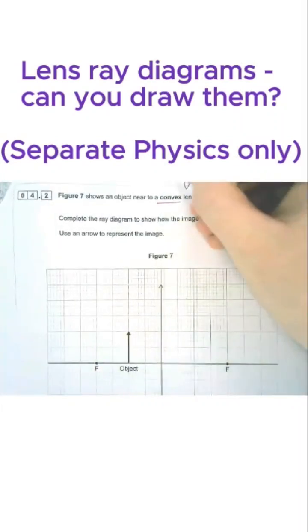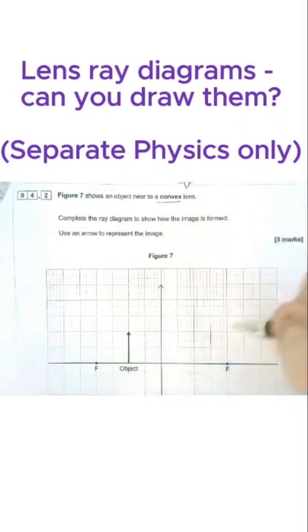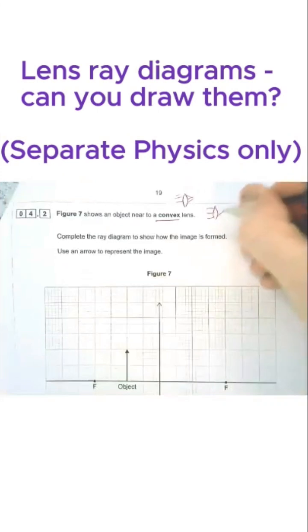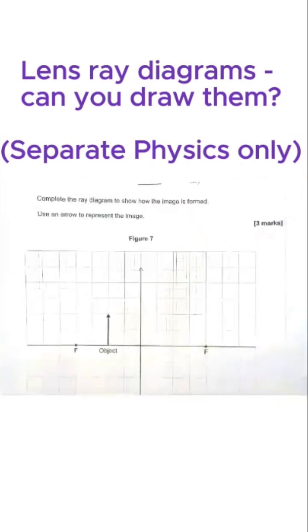It's a convex lens, read the question carefully. Convex means the rays of light get closer together, as in my very bad diagram there. So we draw one ray from the top of the object, so ray...